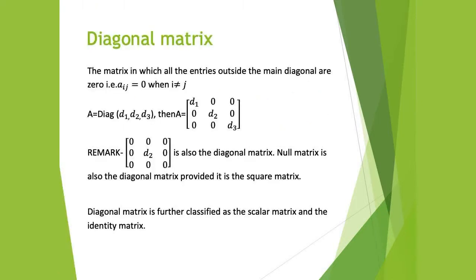Square matrix is classified as the diagonal matrix and triangular matrix. First let's study about the diagonal matrix. The matrix in which all entries outside the main diagonal are 0 — that is, a_ij is 0 when i is not equal to j.